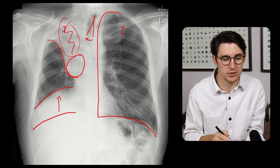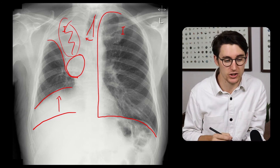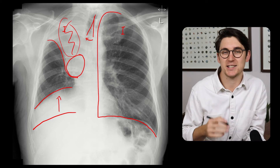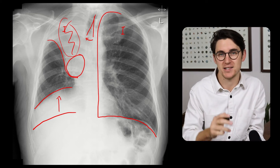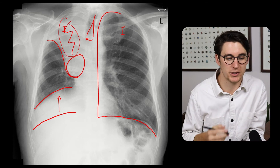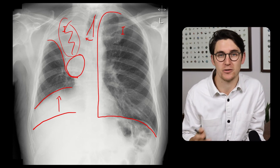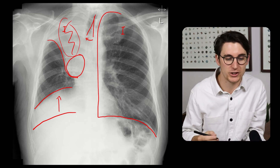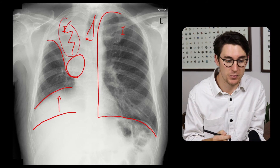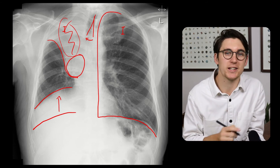Another reason I like this X-ray is because it brings up another point: satisfaction of search. As a radiologist or clinician looking at this chest X-ray, it's easy to find an abnormality like this, tick the box, and be tempted to move on to the next patient. But as a good radiologist, we need to examine the rest of the film and look for other features — especially when we have a suspicion of an underlying neoplasm or something that could be metastatic.